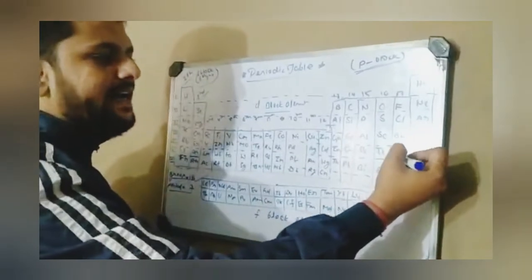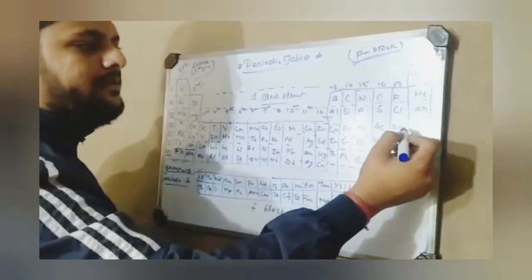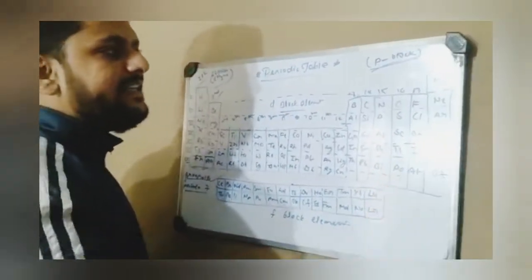Group 17 elements: Chlorine, Bromine, Iodine and Astatine. Last group is group 18, with the short trick for noble gases: Helium, Neon, Argon, Krypton, Xenon, Radon.